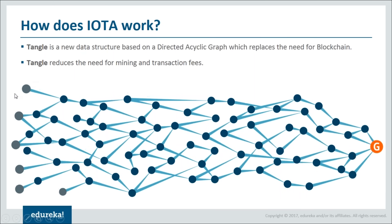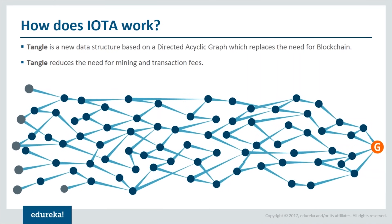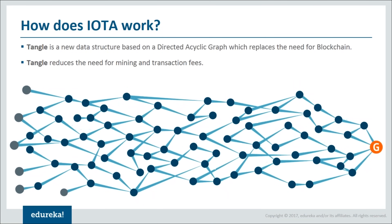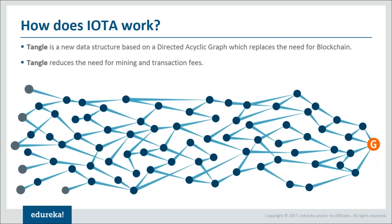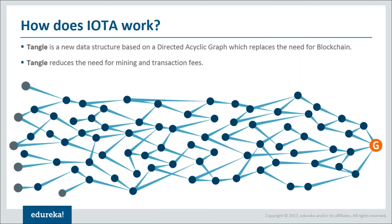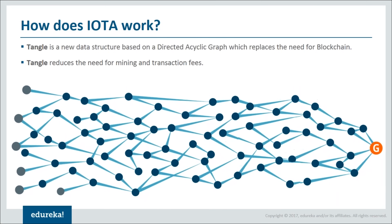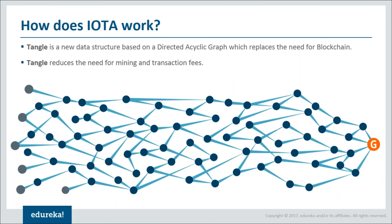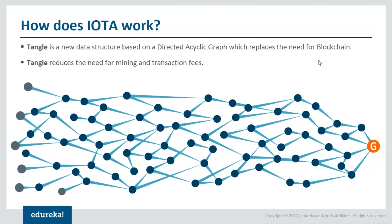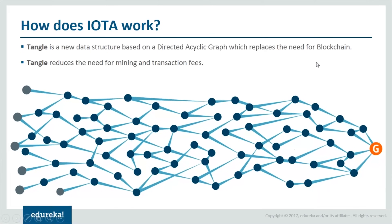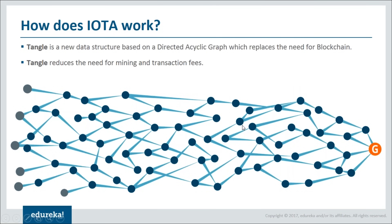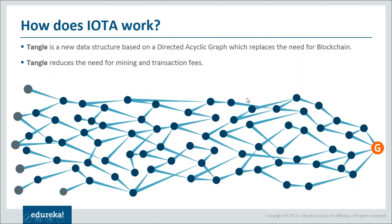Let's take a simple example. When I add a new transaction to the Tangle, I select two edge nodes and connect them to this transaction. Once this transaction is confirmed, new transactions connect to it, and so on. This ensures that multiple transactions are happening while one is being validated, which increases scalability and makes the system faster compared to normal blockchain transactions.